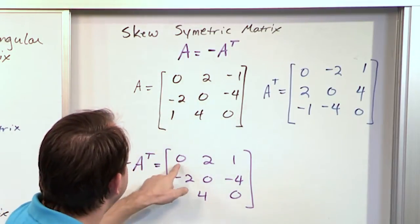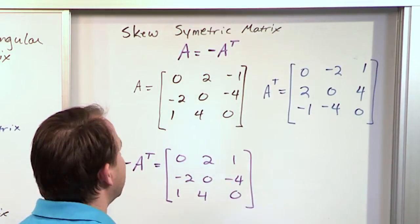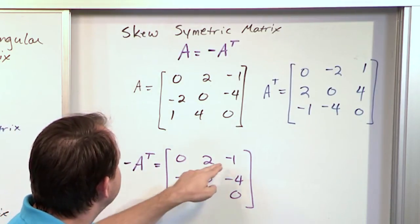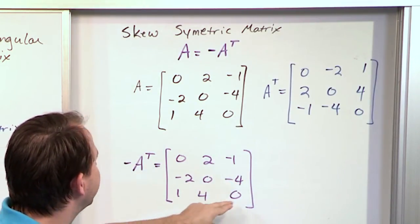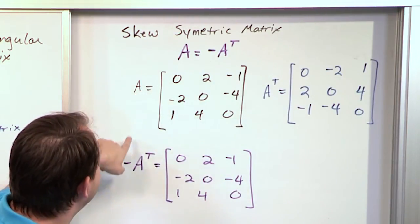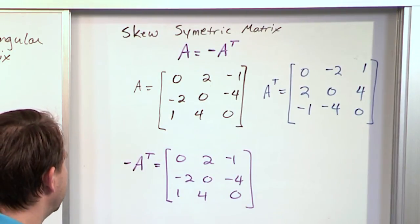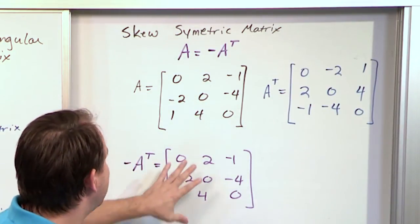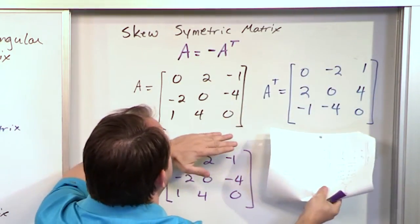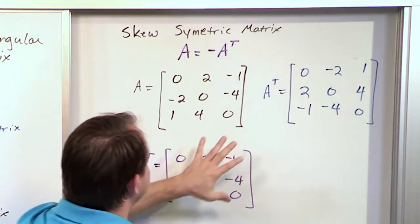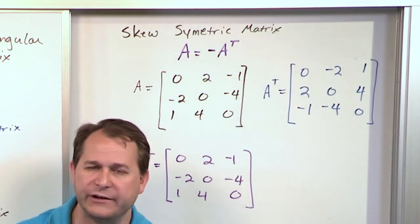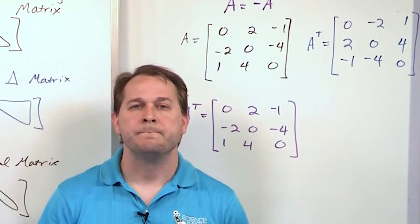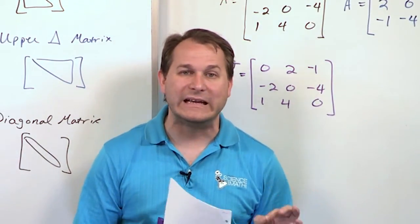Now notice what we have. Correcting the matrix: original A is 0, 2, −1 / −2, 0, −4 / 1, 4, 0, and the negative of the transpose gives us 0, 2, −1 / −2, 0, −4 / 1, 4, 0 — these all match the original matrix. So the original matrix equals the negative of its transpose — that's what makes it skew-symmetric. The absolute values of the elements are the same as in the original matrix; it's just that you need a negative sign in front to make them equal. On an exam or homework, you may be given a matrix and asked to determine if it's symmetric or skew-symmetric, or to find its transpose.